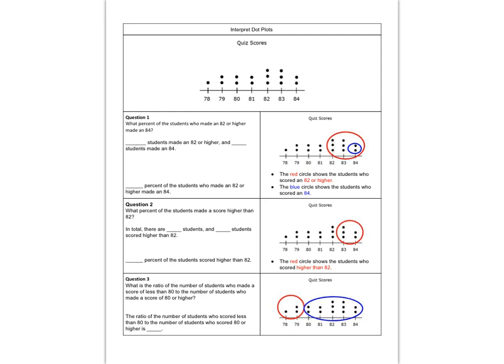So question one says, what percent of the students who made an 82 or higher made an 84? And then there's some guidance here to help us figure that out. Let's look at the picture over here on the right. Well what I notice in the picture is that the red bubble, those are the kids who have an 82 or higher. There are eight dots inside that red bubble. Now the students who made an 84, there are two of them, right?